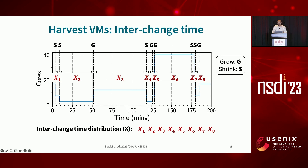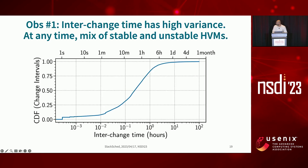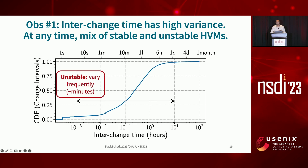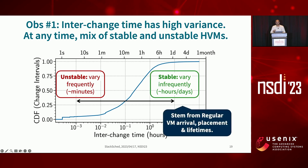We plot this distribution as a CDF of the interchange times. We find that the interchange time distribution has high variance. At any given time, there are harvest VMs at different points on the spectrum — there are harvest VMs that are unstable, changing very frequently every few minutes, and there are also those that remain stable for hours or days. This distribution emerges directly from the arrival, placement, and lifetimes of regular VMs running in the cloud.